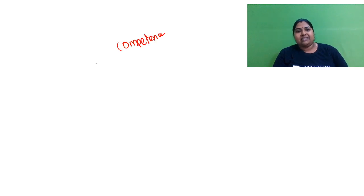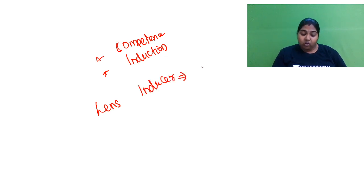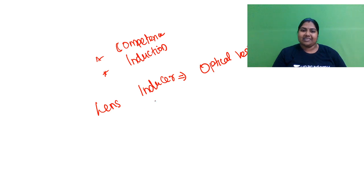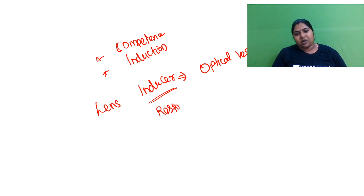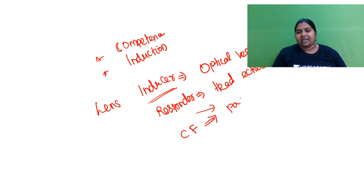To recap: two important concepts — induction and competence. Who is the inducer for the lens? It is the optical vesicle. Who is the responder? The head ectoderm. What makes the head ectoderm the responder? It is the competence factor PAX6.